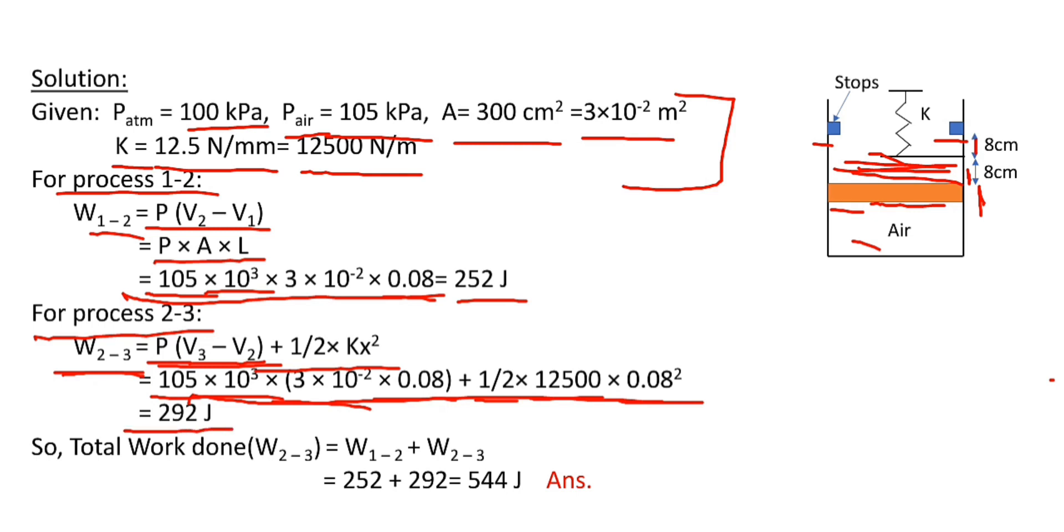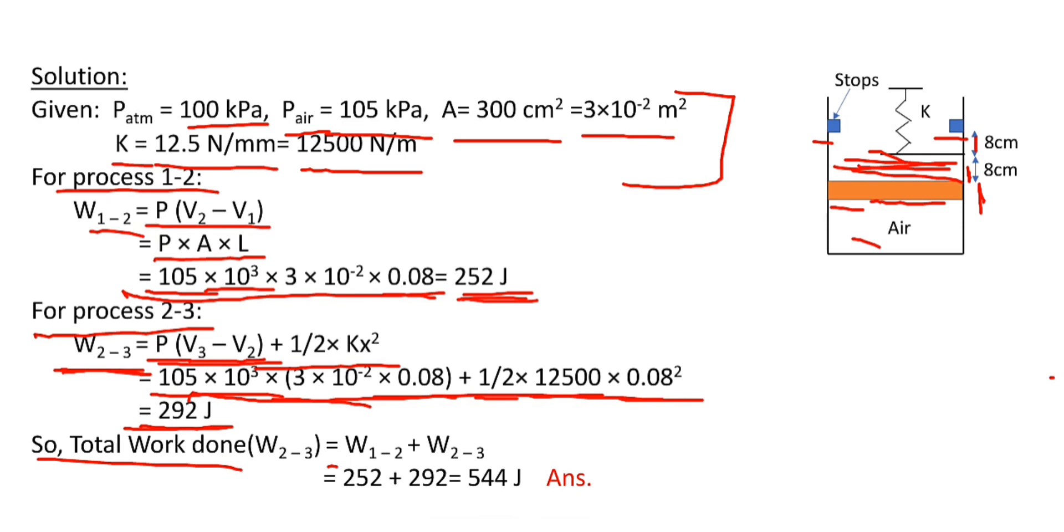Total work W₁₋₂₋₃ equals work done during process 1 to 2 plus work done during process 2 to 3. We calculated work done during 1 to 2 as 252 Joules.